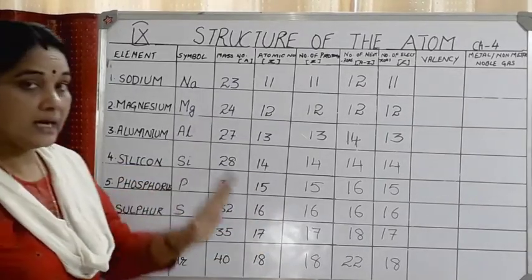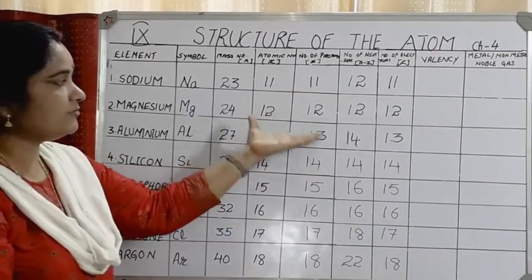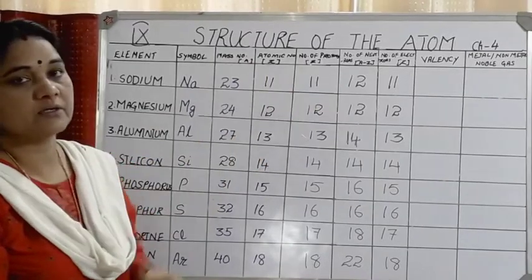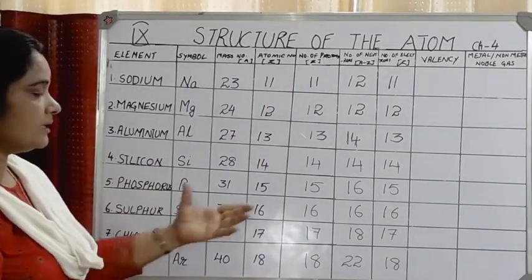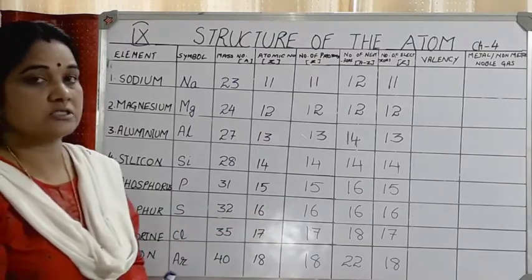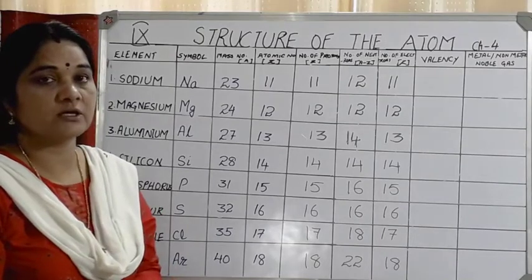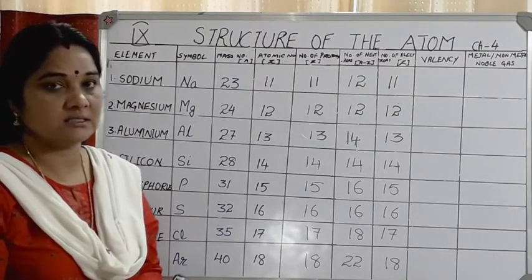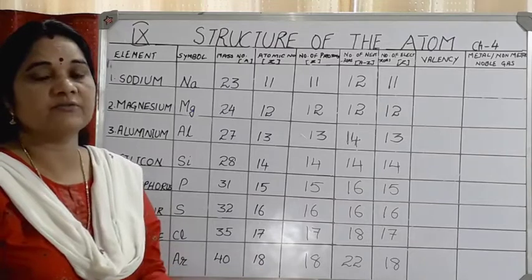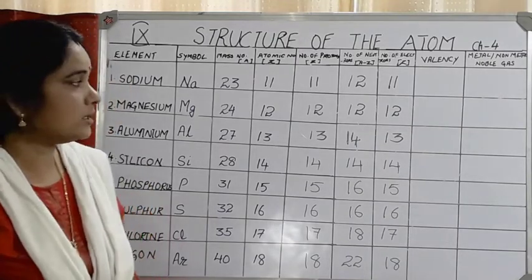You can see that atoms of each element are different from each other because they have different numbers of protons, electrons, and neutrons. From the electronic configuration, we can also find the number of electrons in the outermost shell — known as valence electrons — which tells us the valency of the element and whether it is a metal, non-metal, or noble gas.